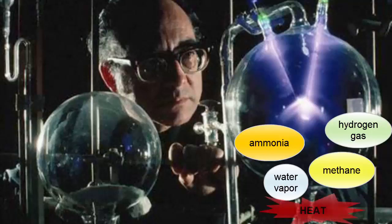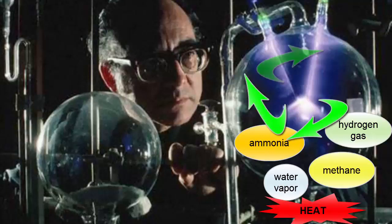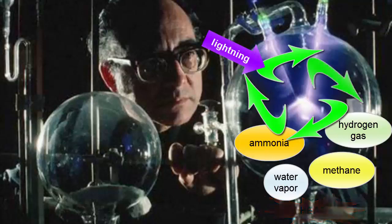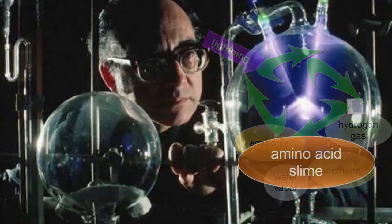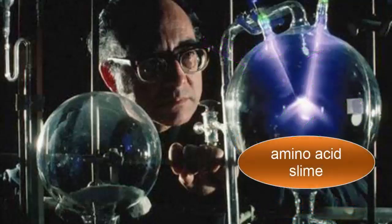He warmed a soup of these chemicals, circulated them through a region where they were subjected to electric sparks simulating lightning, and cooled them and returned the products to the soup. Within a few days, the soup was a brown slime that contained amino acids, the building blocks of proteins.